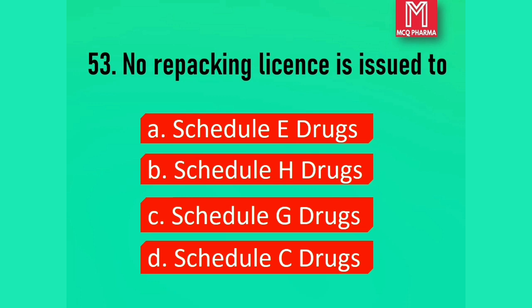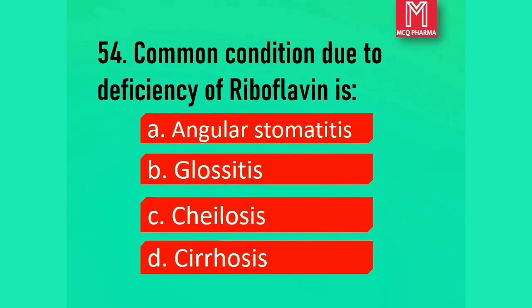Question number 53. No repacking license is issued to: Option A, Schedule E drugs. Option B, Schedule H drugs. Option C, Schedule G drugs. Option D, Schedule C drugs. Correct answer: Option D, Schedule C drugs. Schedule C includes biological and special products such as vaccines and sera.